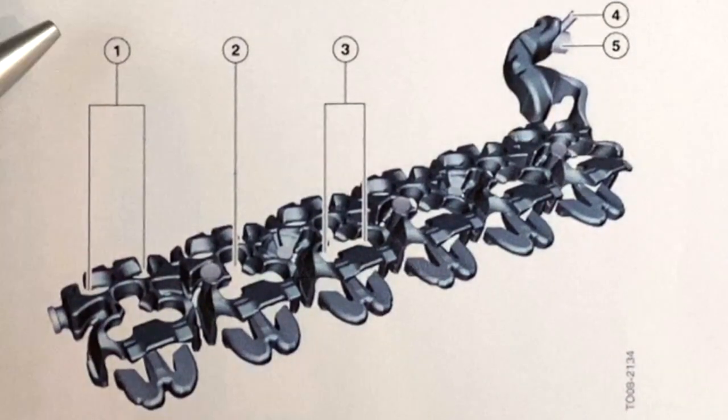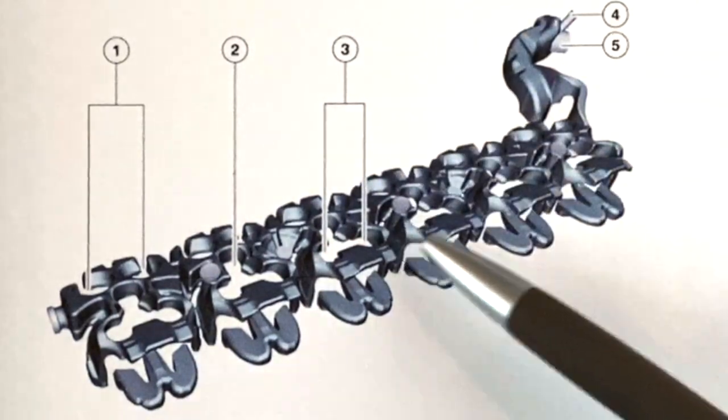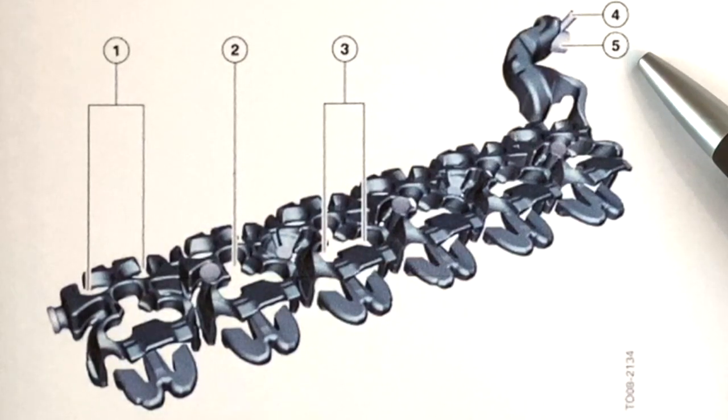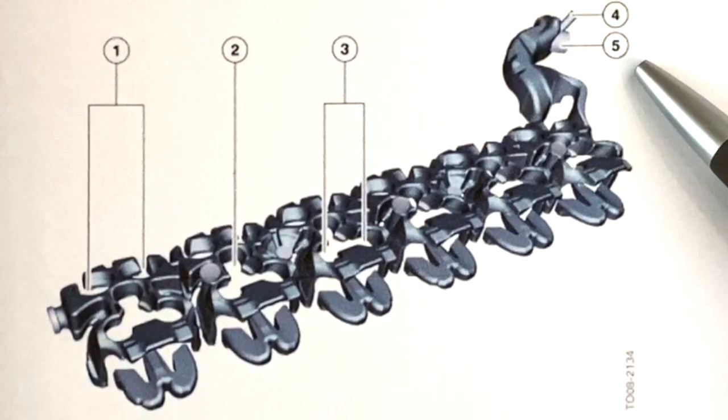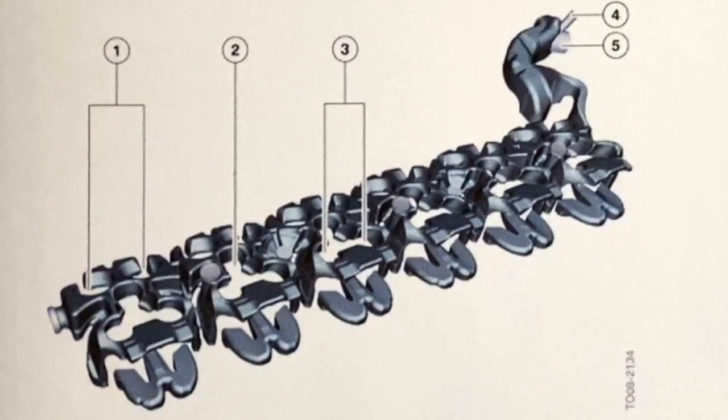This diagram shows the coolant passages. Number one represents the passage of fluid around the intake valves. Number two around the injector. Number three is the exhaust valves. Number four shows where the connection of the coolant hose and the thermostat is, it's considered a small cooling circuit. And number five shows the connection of the coolant hose and the radiator, which is the large cooling circuit. The coolant passages in the cylinder head are also used for indirect cooling of the fuel injectors.